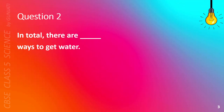Question 2. In total, there are blank ways to get water. A. 100, B. 50, C. 8, or D. 5. The correct answer is C. 8.